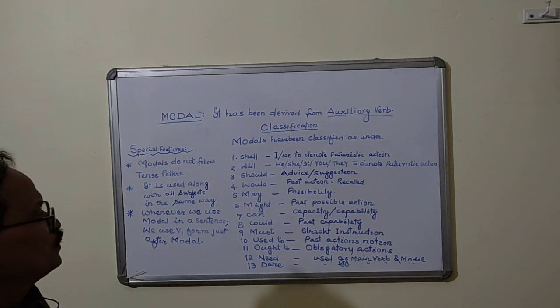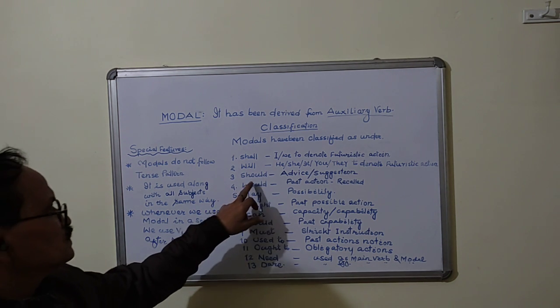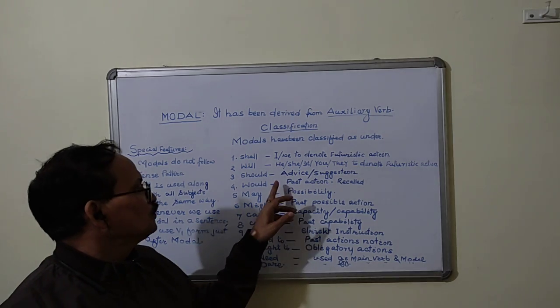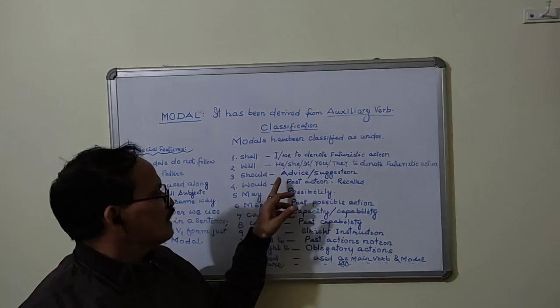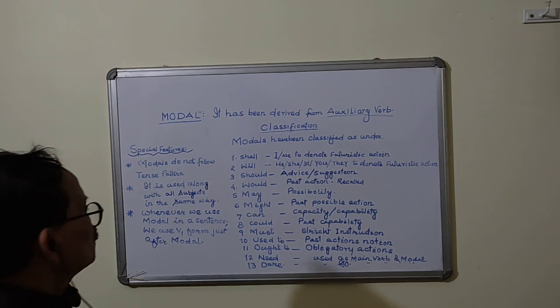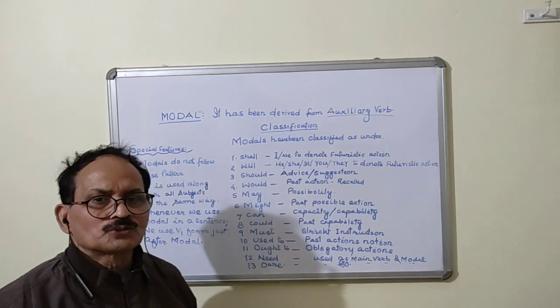Number three is should. This should as a model is used to give advice or suggestion. For example, if I say you should read properly.